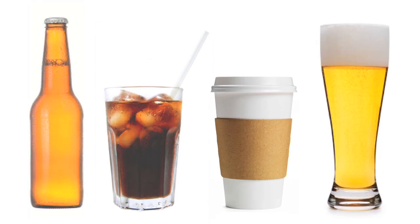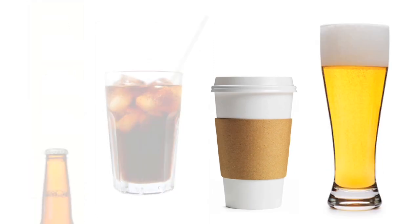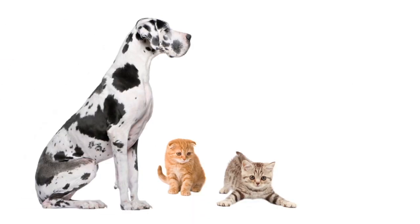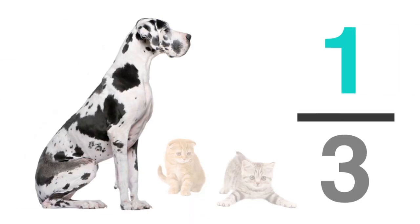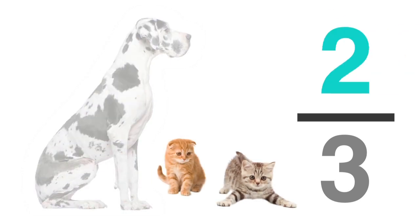A fraction can also refer to a portion of a group of items. If one of your neighbors has three pets — two cats and one dog — one-third of the pets are dogs, and two-thirds of the pets are cats.